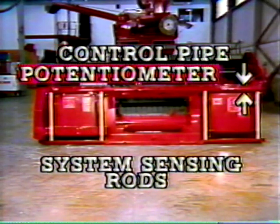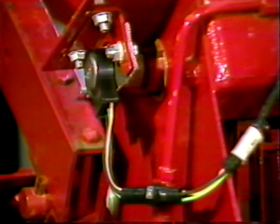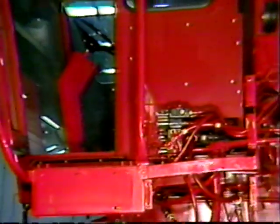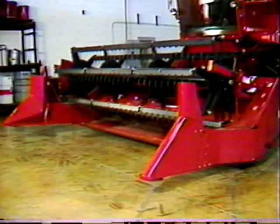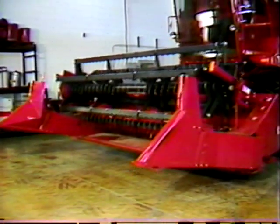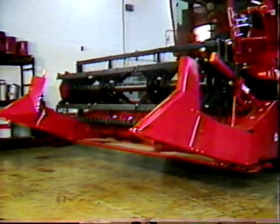The sensing rods rotate a hollow control pipe that spans the width of the header. When this pipe rotates, it in turn rotates a potentiometer attached to the pipe on the left-hand side. The potentiometer sends a signal to a system control box mounted under the combine control console. When the control box senses a change in signal due to variations in ground contour, it triggers a solenoid switch.